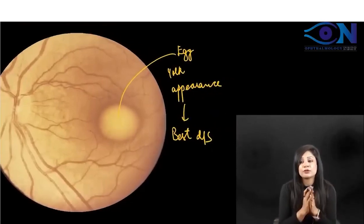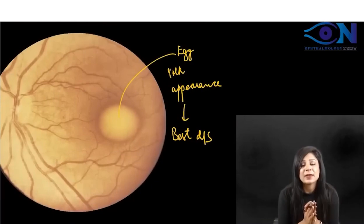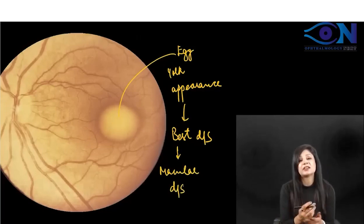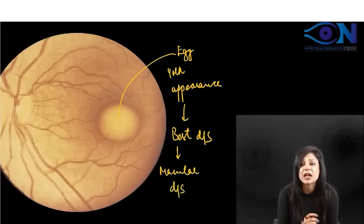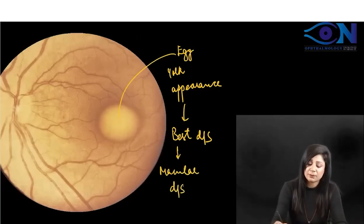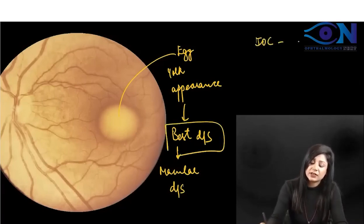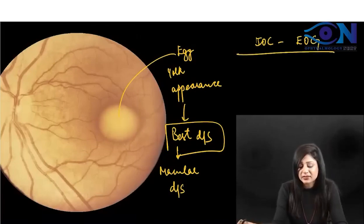If you have seen the image showing headlight in the fog appearance and egg yolk appearance and then read the options — if it is Best disease they will be talking about macular disease, macular dystrophy. If it is headlight in the fog appearance they are talking about toxoplasmosis. For egg yolk appearance, the investigation of choice is EOG — that is the best investigation.